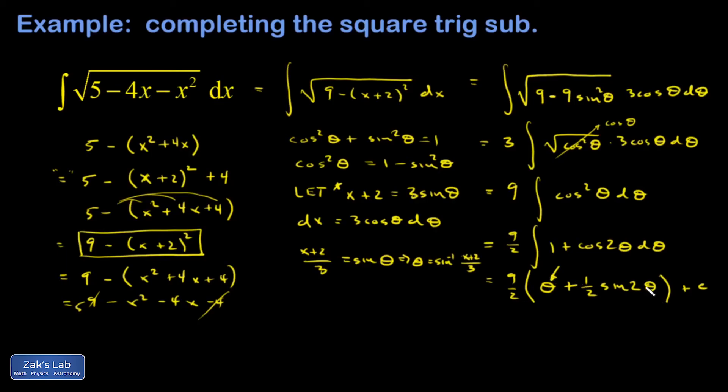But on the second term it's going to be problematic. I have the sine of twice the angle whose sine is (x + 2)/3, and the only way to deal with that is to use another identity. That 2θ is a problem. So I replace sin(2θ) with 2sin(θ)cos(θ), and the 2 cancels the ½, so I have sin(θ)cos(θ) plus C.